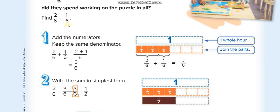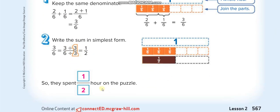Here, 2 over 6 plus 1 over 6 is equal to 3 over 6. Now you can see that this is not the simplest form. You can simplify it by dividing up and down by 3: 3 divided by 3 is 1, and 6 divided by 3 is 2. So the answer is 1 over 2, which is one half.